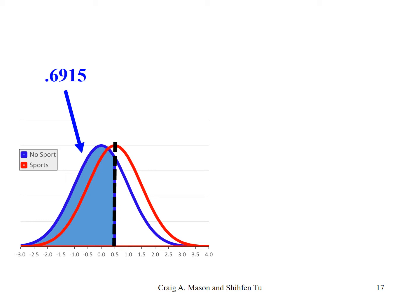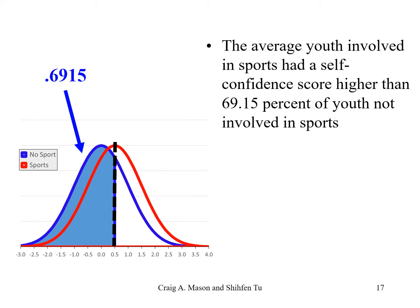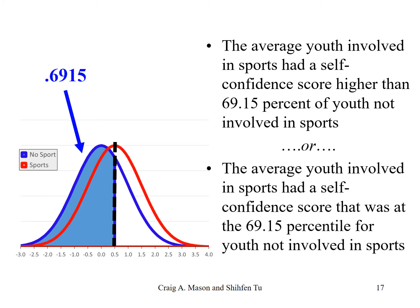There are a few ways you can describe this. You could say that the average youth involved in sports had a self-confidence score higher than 69.15% of youth not involved in sports. Alternatively, you could phrase this as the average youth involved in sports had a self-confidence score that was at the 69.15th percentile for youth not involved in sports. Basically that's saying the same thing, except it frames it around percentile ranks.